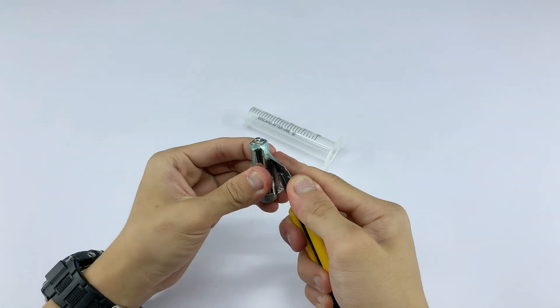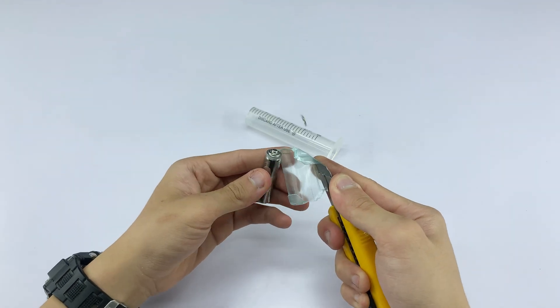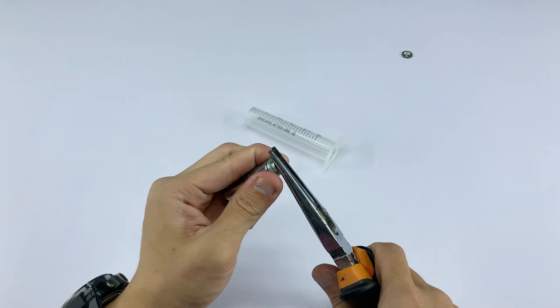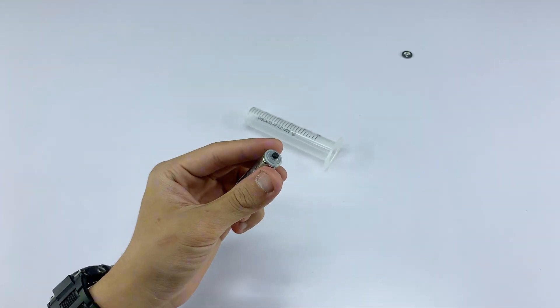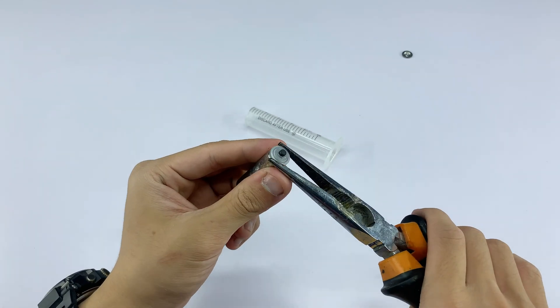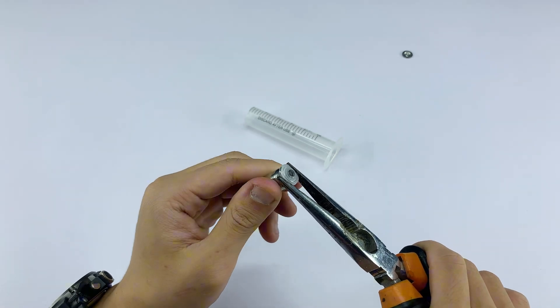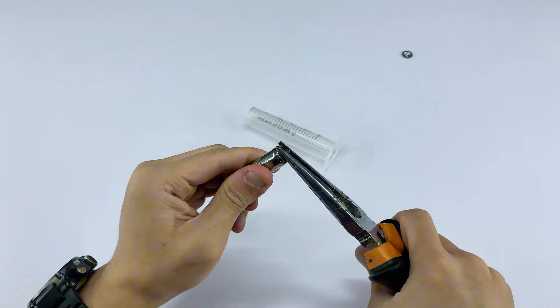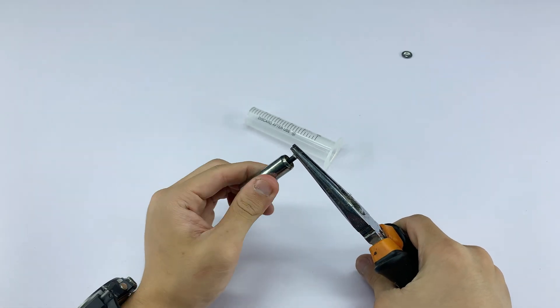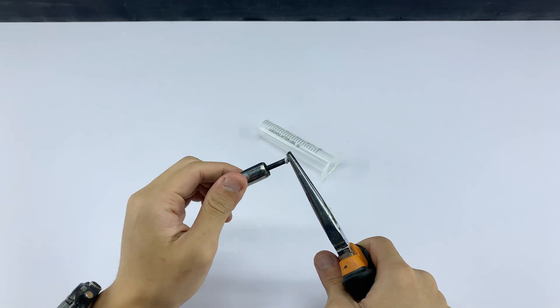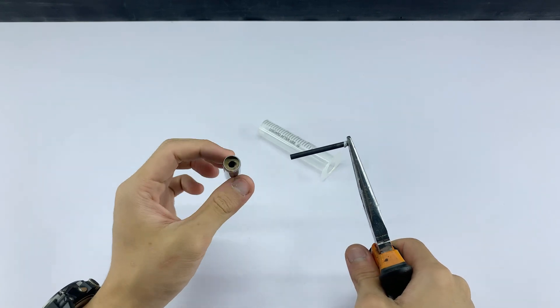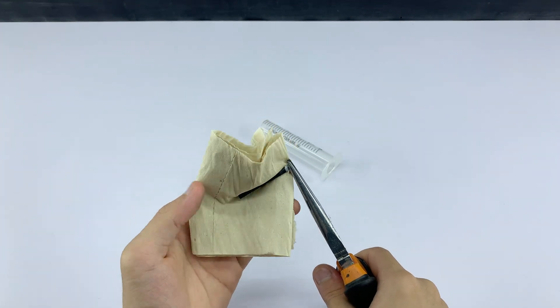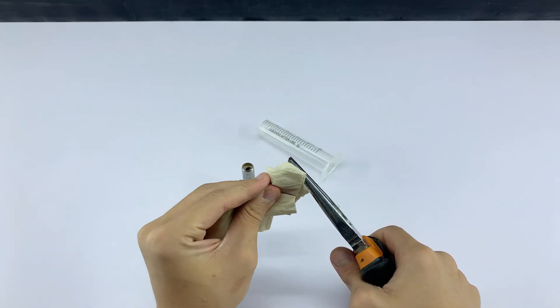Inside, you'll find a carbon rod. This rod is key for conducting electricity, and I'm using pliers to extract it. Once removed, I'm cleaning off the residue with a paper to get it ready for use.